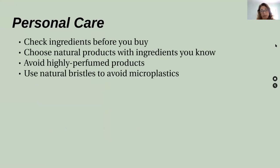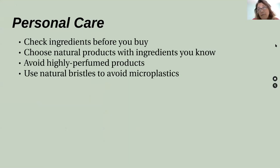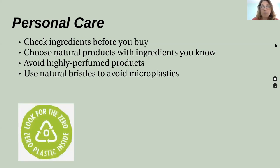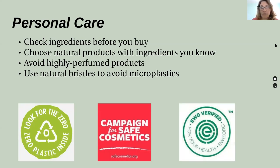Moving on to personal care products — this is a tricky one. Learning as much as you can is the first step in taking responsibility for what you're buying and putting on your body. Checking ingredients, just like with household hazardous waste — look at the label. The label very rarely lists every ingredient; it'll tell you the active ingredient or the one in highest concentration. But even that gives you information. We'll send you that list of ingredients to look out for. Another option is to choose natural products with ingredients you recognize. Avoid highly perfumed products — perfumes have literally hundreds of ingredients, almost never revealed, and many are toxic.